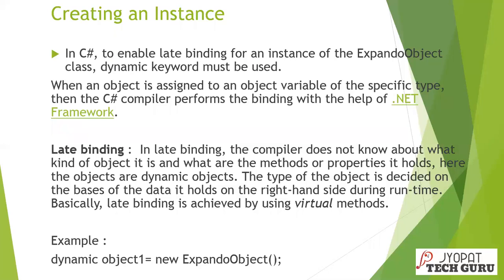When an object is assigned to an object variable of a specific type, the C# compiler performs binding with the help of the .NET Framework. Here we are using the concept called late binding. In late binding, the compiler does not know what kind of object it is or what methods or properties it holds. The objects are dynamic objects, and the type is decided based on the data it holds on the right-hand side during runtime. Late binding is achieved using virtual methods, so whenever you want to change the behavior of data during runtime, you can prefer the dynamic keyword.